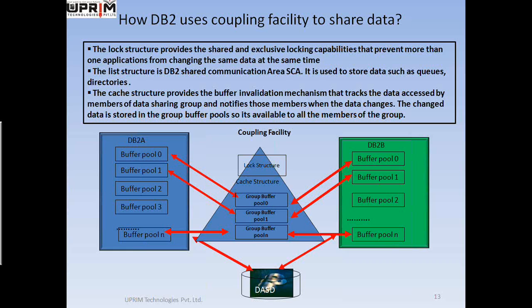The SCA or list structure is used to store data such as work queues, directories, and status information organized in a list. The lock structure provides the shared and exclusive locking capabilities that prevent more than one application from changing the same data at the same time.